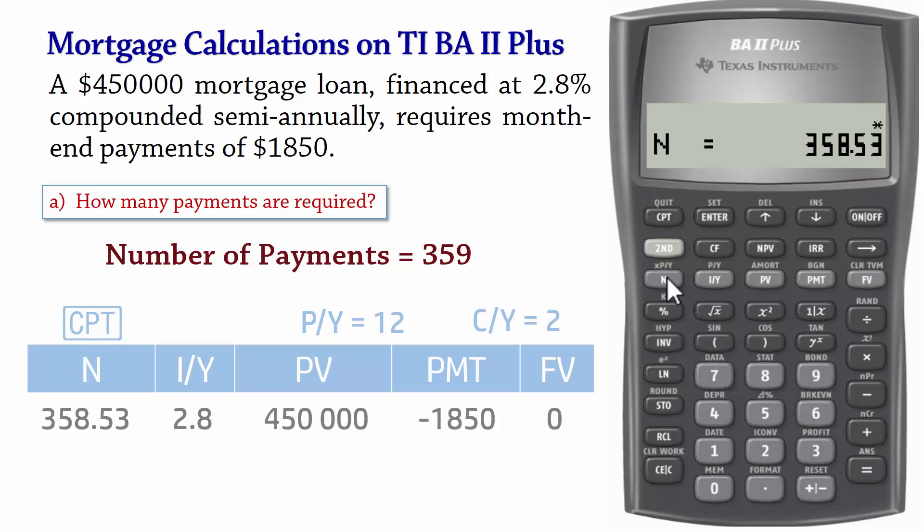The size of the 359th payment, however, will be smaller than the previous payments of $1,850.